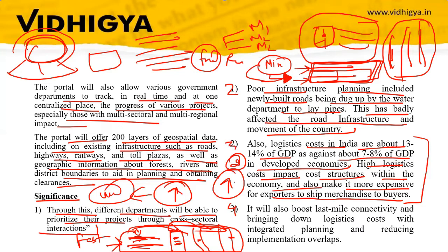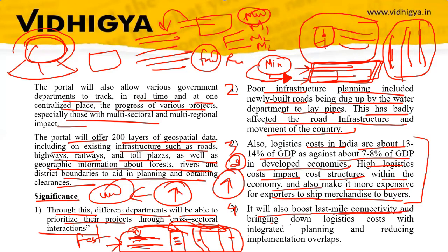PM Gati Shakti will also boost last mile connectivity. When multiple ministries are combined on one platform, they can share information about areas — such as forest areas requiring transportation — and coordinate with the Ministry of Roads and Highways and the Ministry of Shipping. This will boost last mile connectivity and bring down logistics costs through integrated planning and reduced implementation overlaps.